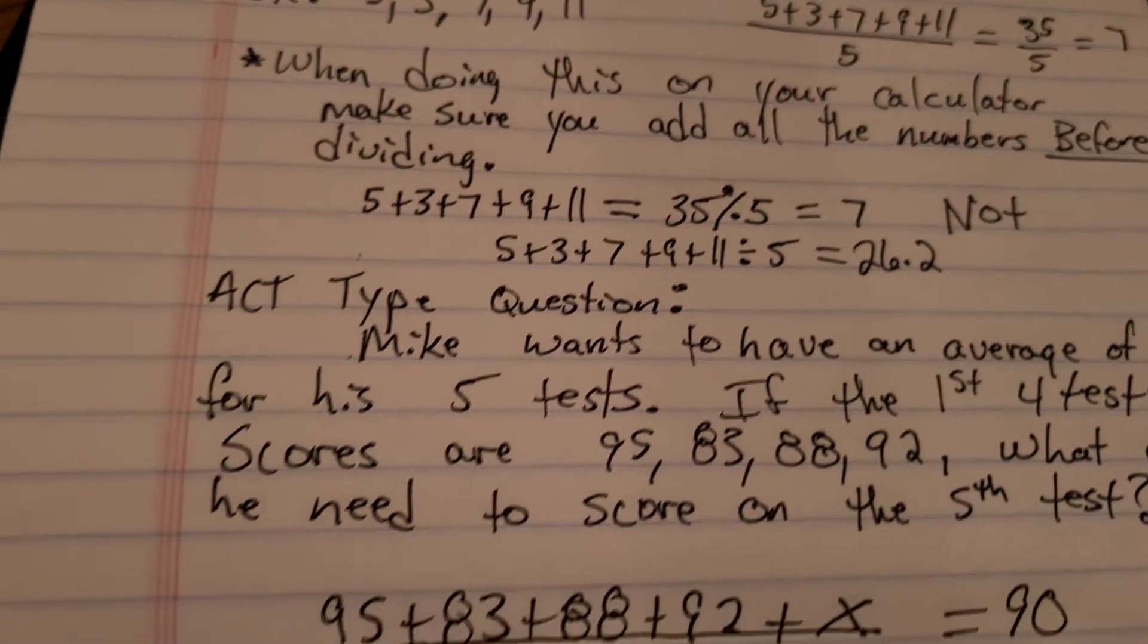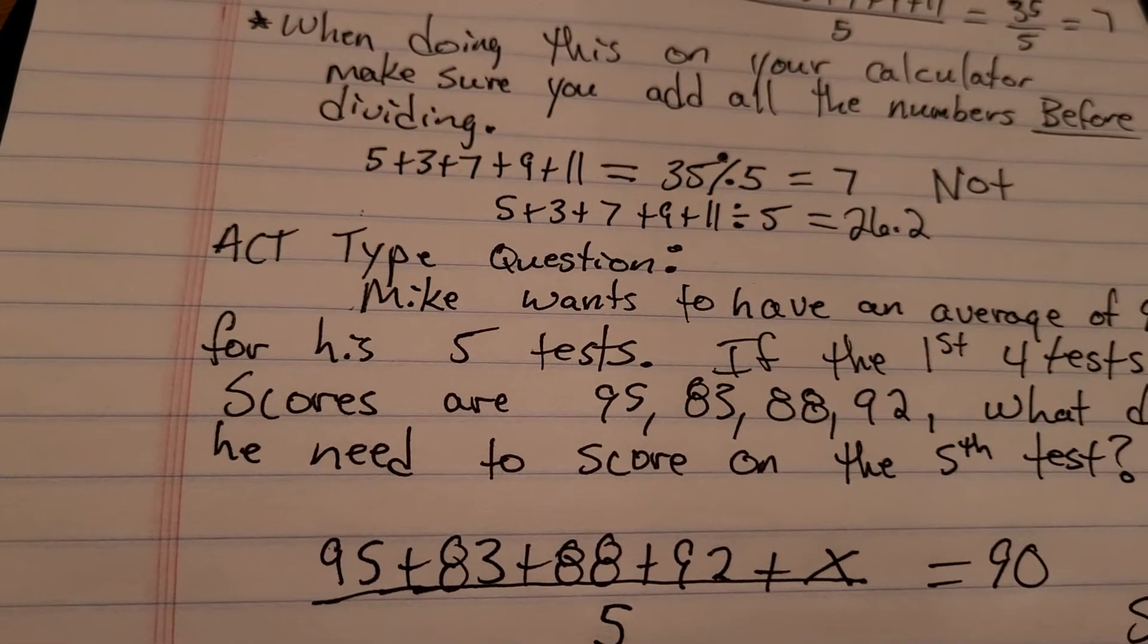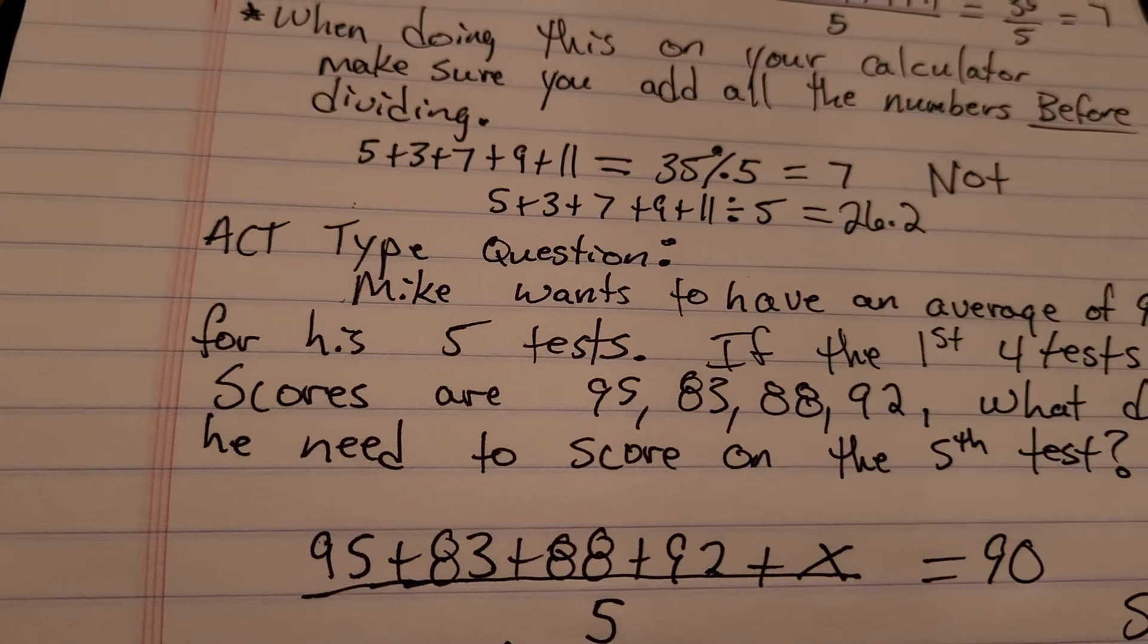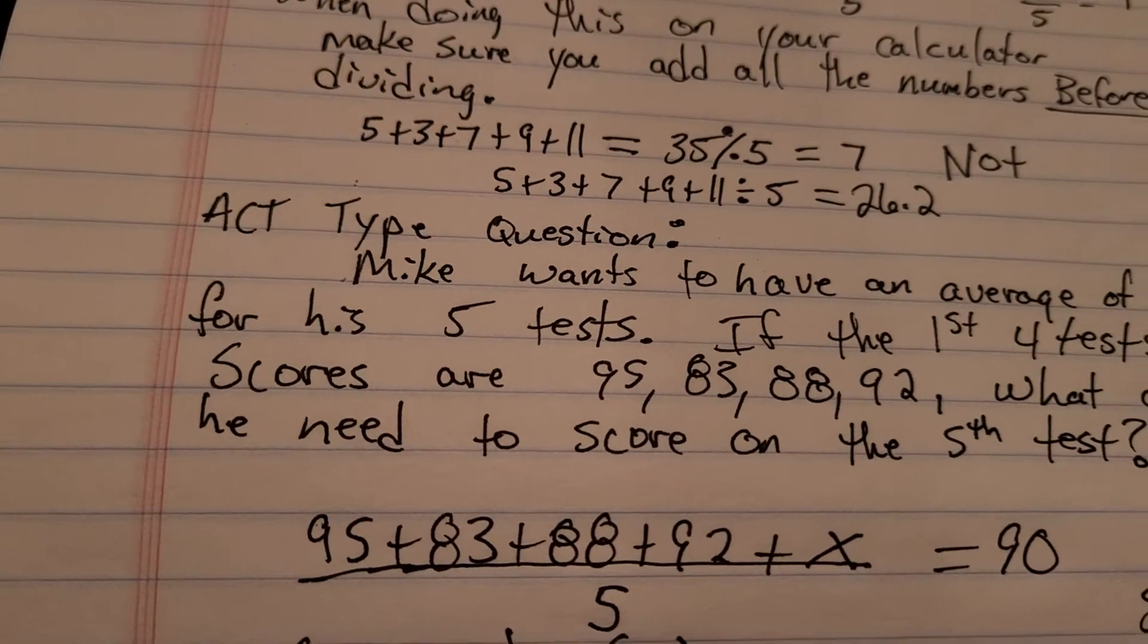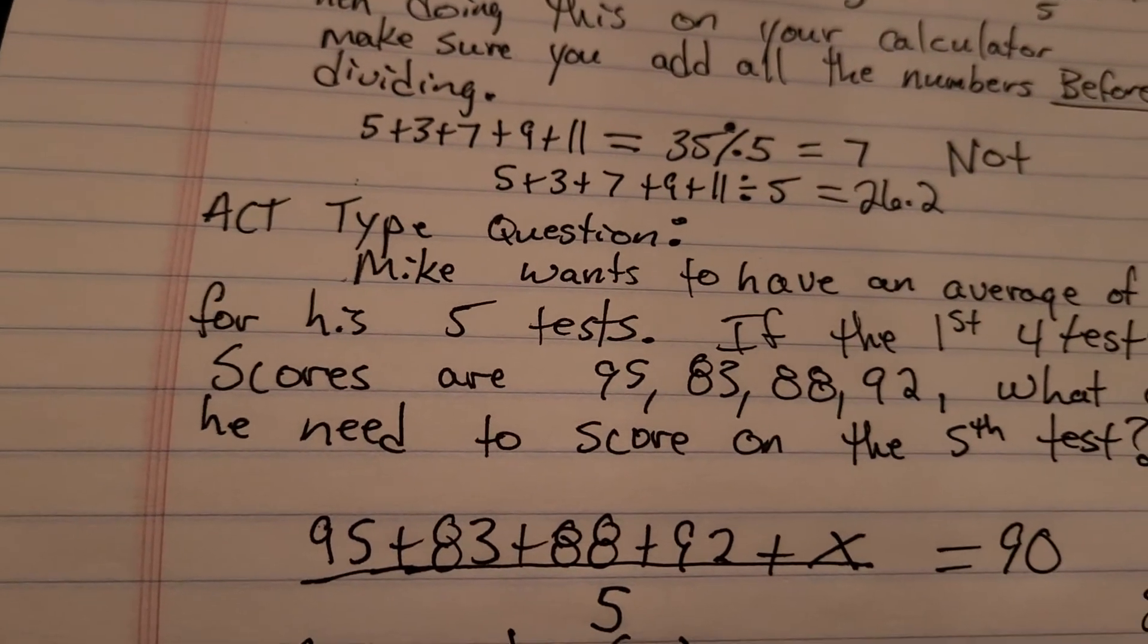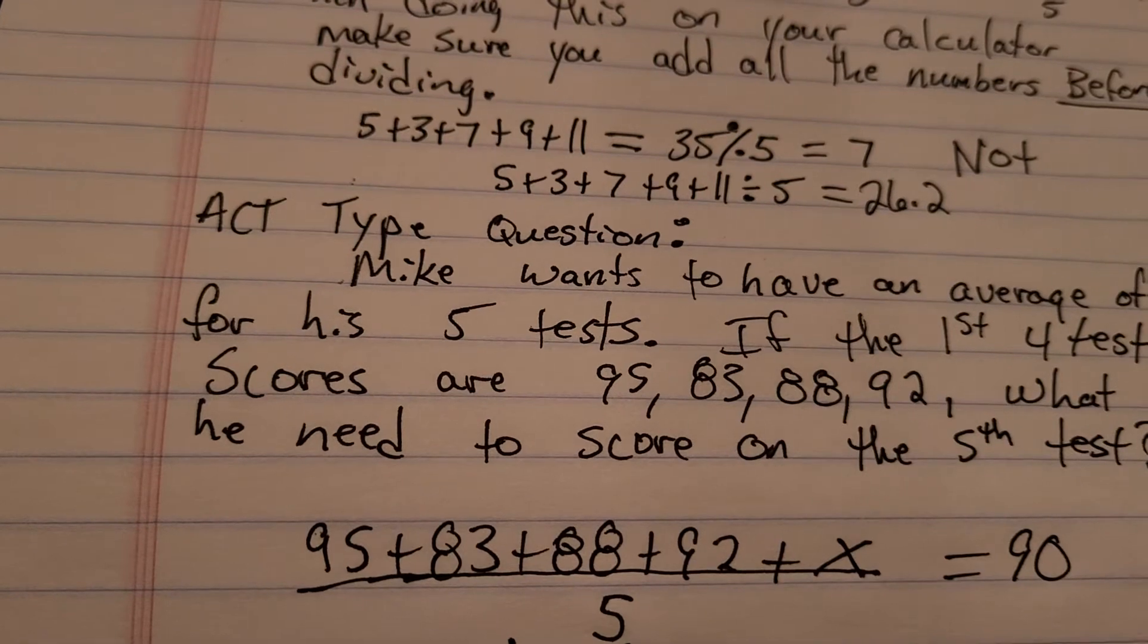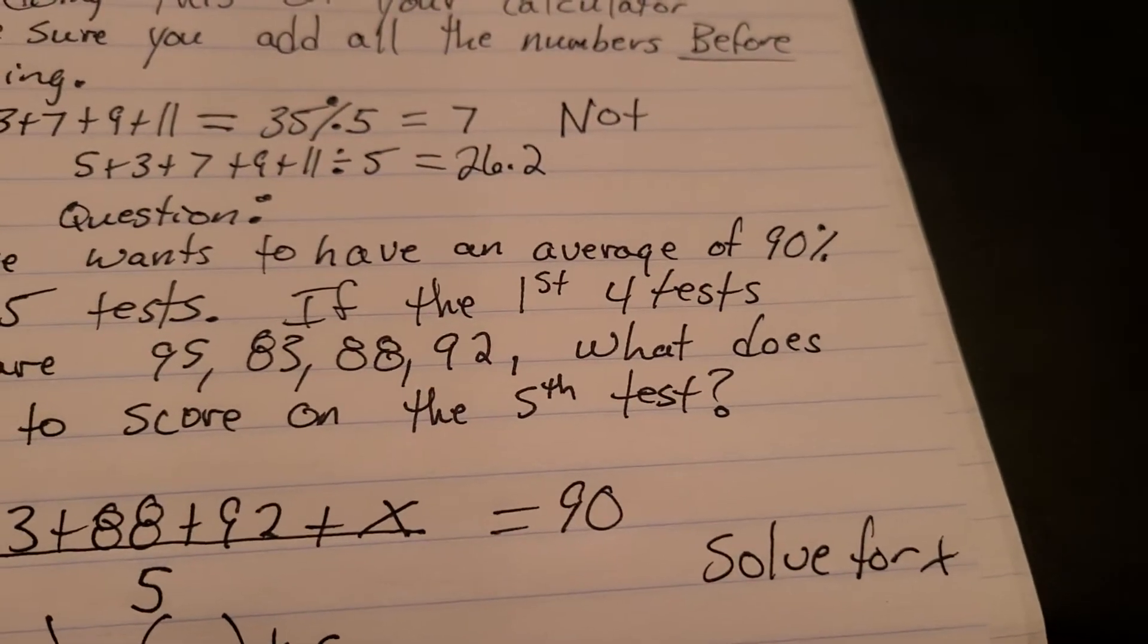The way you set these things up is you set up the same way you would before, except for now we have an unknown value for our 5th test. So we have 95 plus 83 plus 88 plus 92 plus our unknown value, which is x. And we're still taking 5 tests, so we're going to divide that by 5, and we want that to equal 90. And then what we have to do is we have to solve for x.